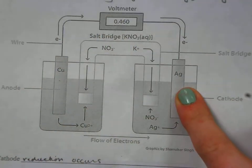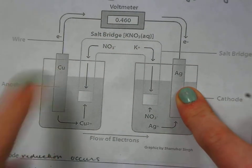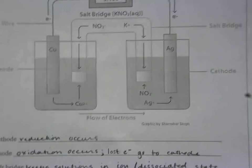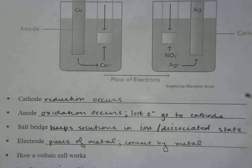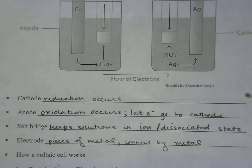One, we have this wire connecting my two electrodes. Remember that electrodes are just the pieces of metal. So cathode, reduction occurs. Anode, oxidation occurs. The anode, we lose electrons and they go to the cathode.